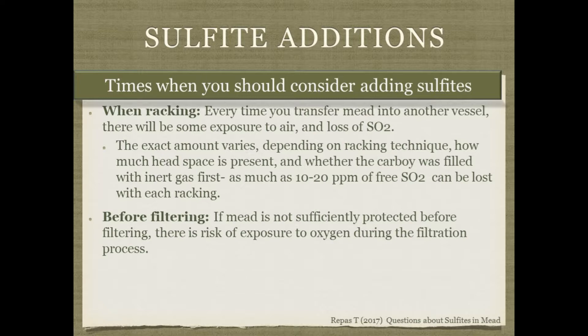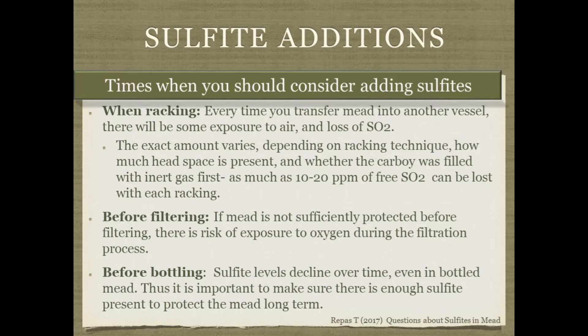Before any process like filtering that risks oxygen exposure, ensure sulfite levels are adequate. Right before bottling, I always do one last test. At this stage I use calculators carefully — by now there should be plenty of bound sulfites, so I'm just topping up the free SO₂ to achieve a molecular SO₂ of at least 0.8 mg/L at the measured pH, ensuring the mead is protected long term in the bottle.